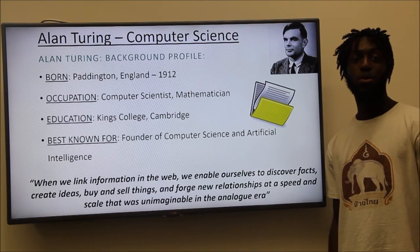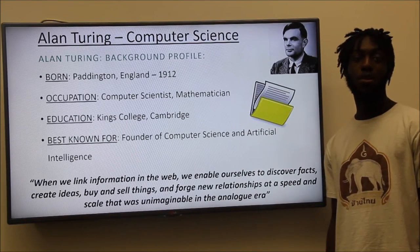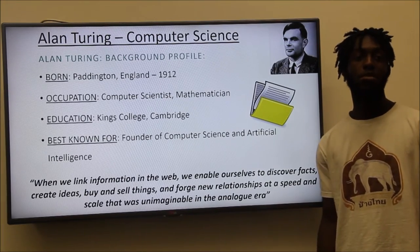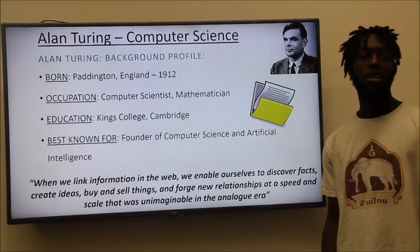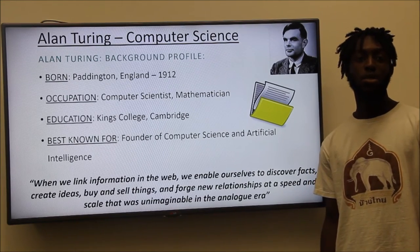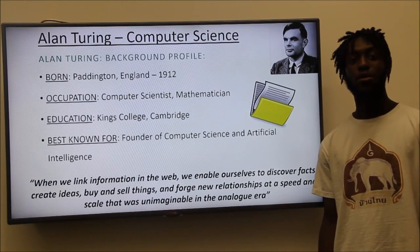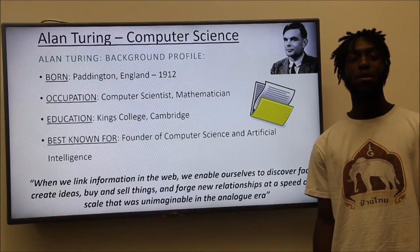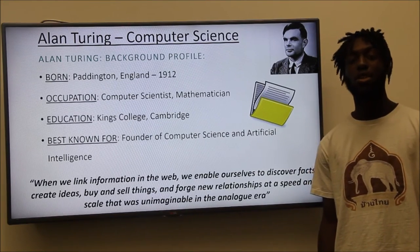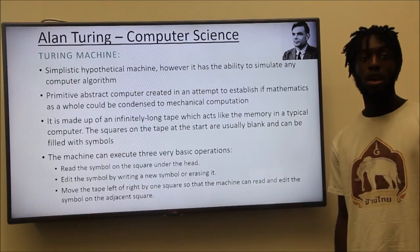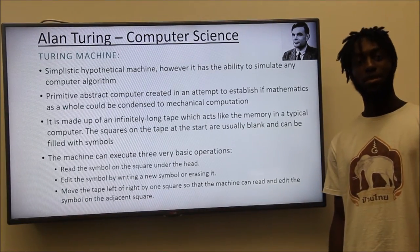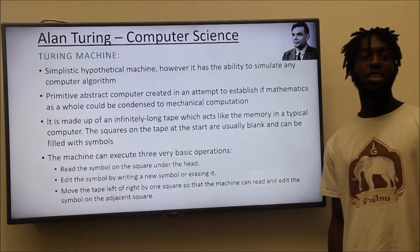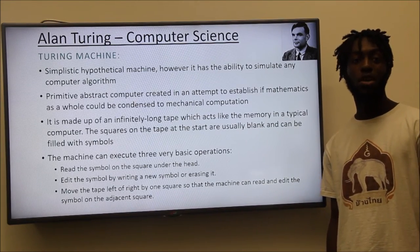Alan Turing was born in 1912 and died in 1954. He gained first class honours in mathematics from King's College in Cambridge and obtained his PhD in 1938 from Princeton. He studied cryptology and built three stages out of four of an electromechanical binary multiplier. He became the founder of computer science and arguably artificial intelligence. Built in 1936, the Turing machine was Alan Turing's first computer invention. Despite its complexity, the Turing machine could simulate any computer algorithm at the time.